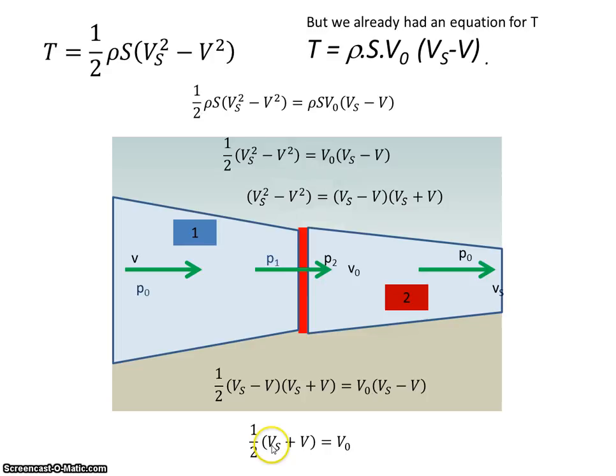And I have ½(vₛ plus v) now is equal to v₀. Now if you look at that equation, what it's really telling us there is that...